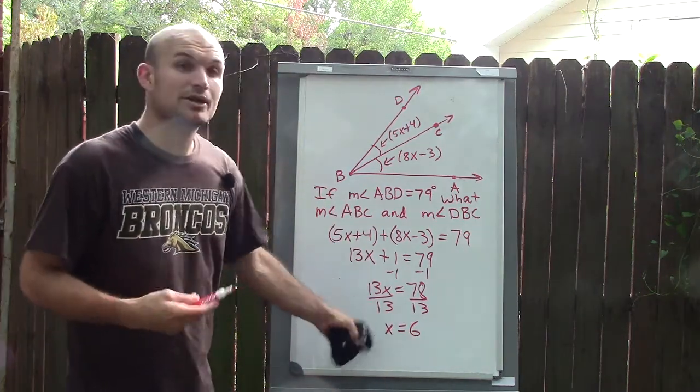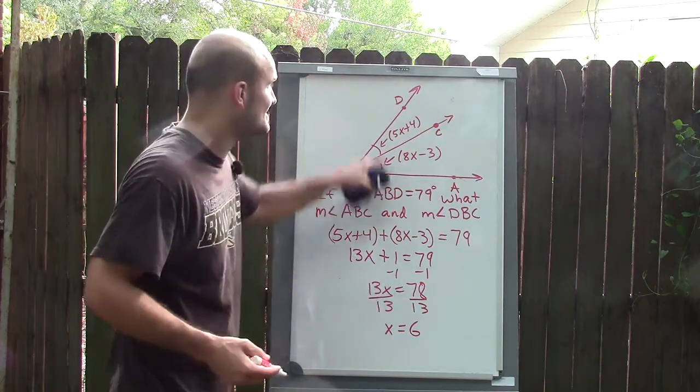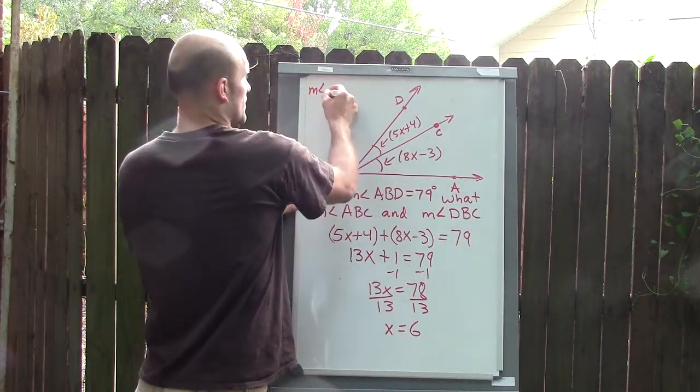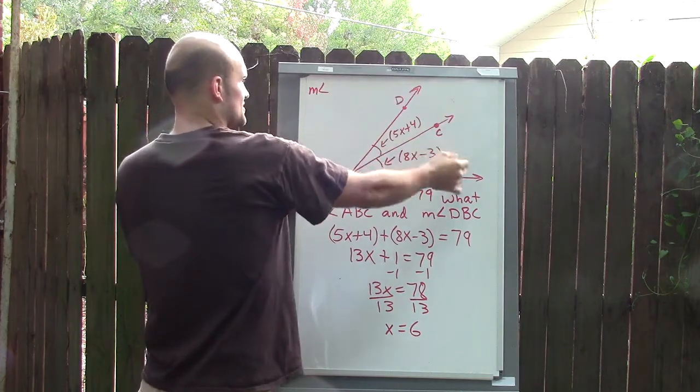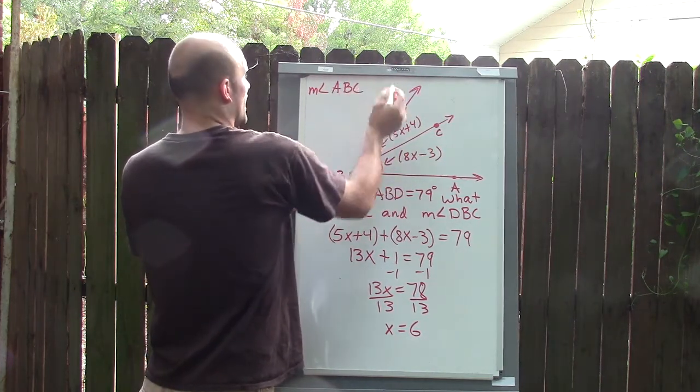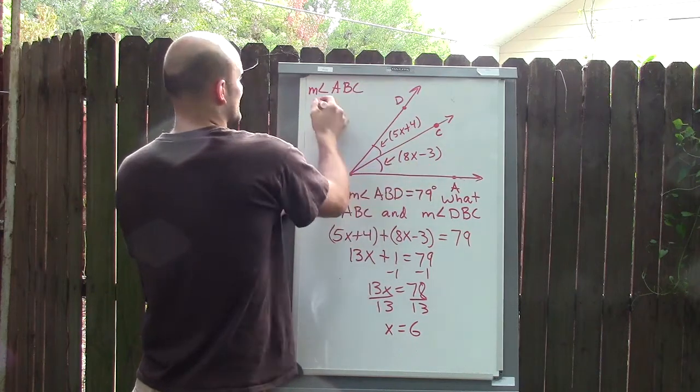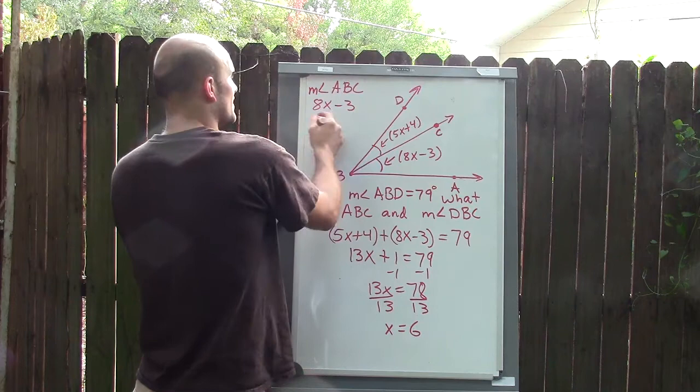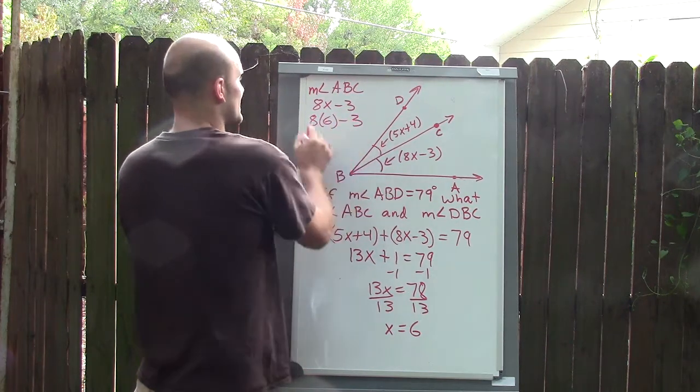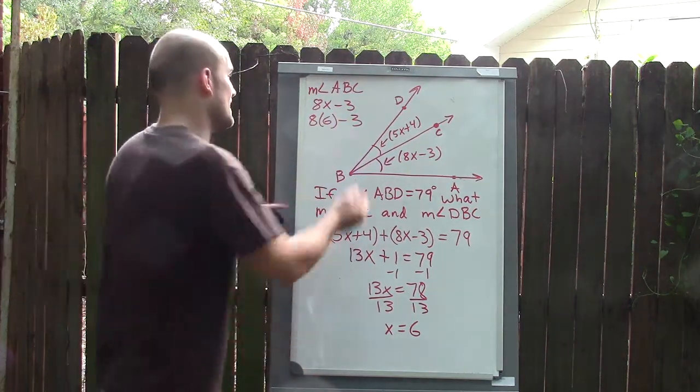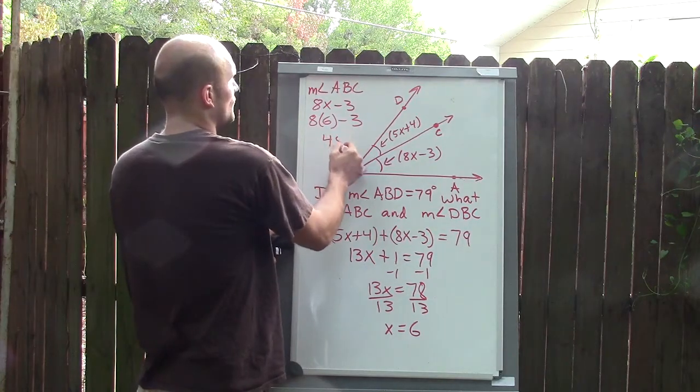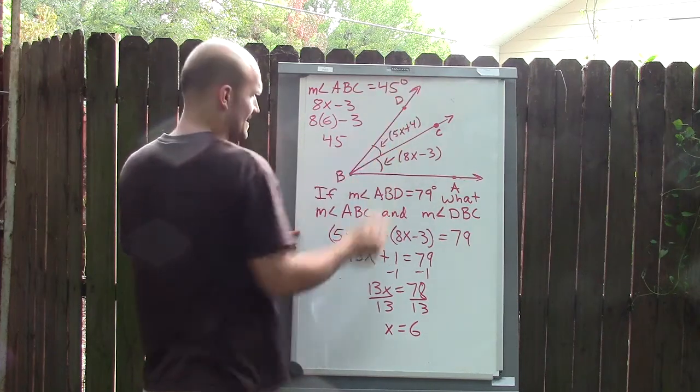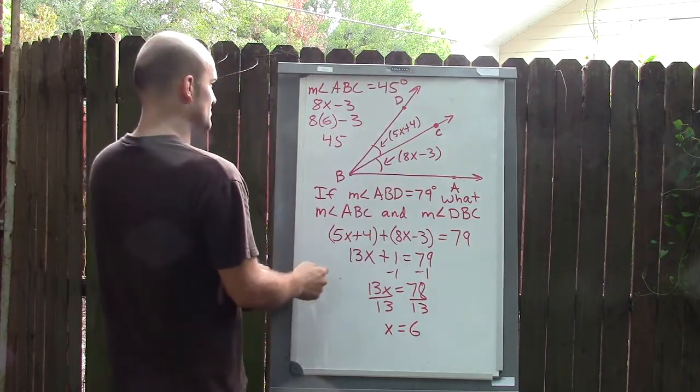So now that I know the value of X equals 6, I can plug in 6 into both of these angles. For the measure of angle ABC, I'll have A to B to C is 8X minus 3. But to find the value of it, I'm going to do 8 times 6 minus 3. 8 times 6 is 48, minus 3 is 45. So the measure of angle ABC is equal to 45 degrees.